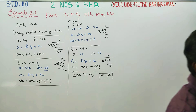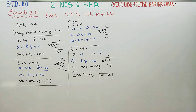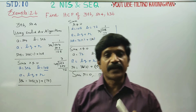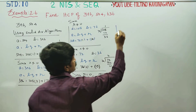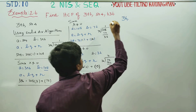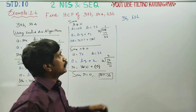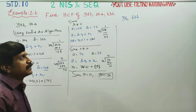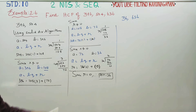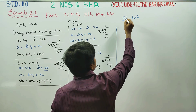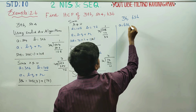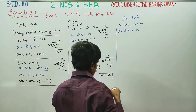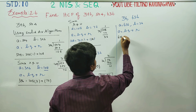Now I will use HCF 36 and the third number 636. Next stage: the new numbers are 36 and 636. I am going to find the HCF using the Euclidean Division Algorithm again. A is equal to the biggest number: A is 636, B is 36. A is equal to BQ plus R.